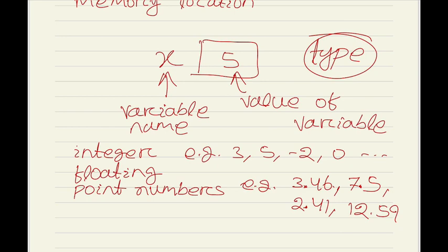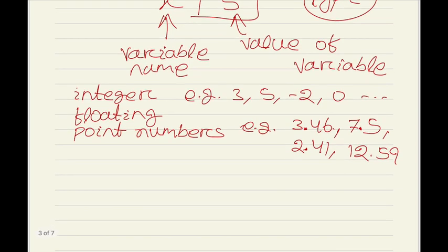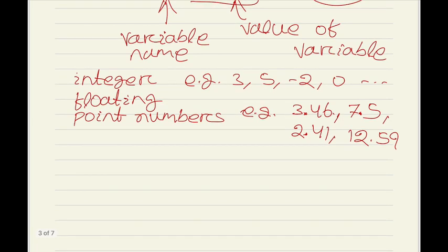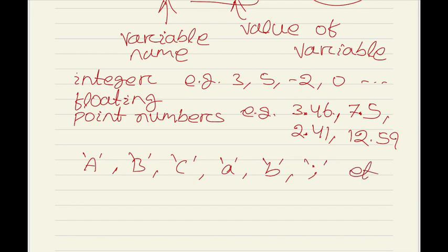We also have another type for individual characters like a, b, c, small a, small b, semicolon like this. So these are the types that hold individual characters or letters.